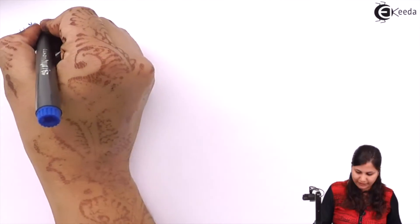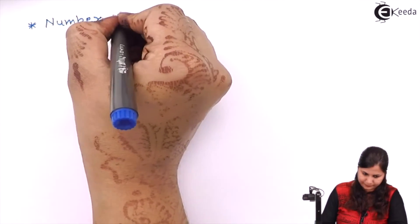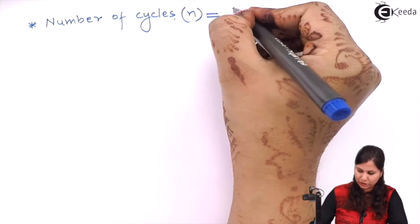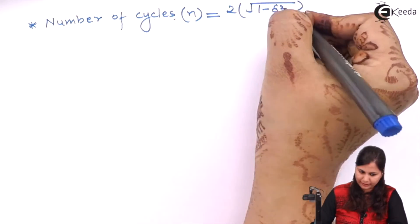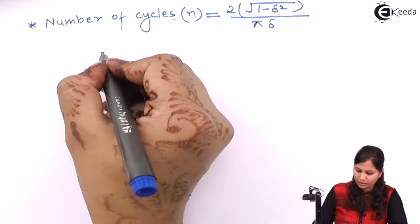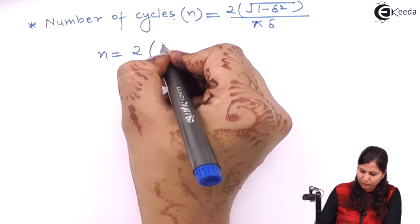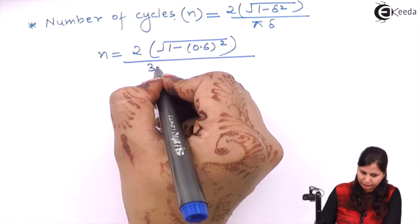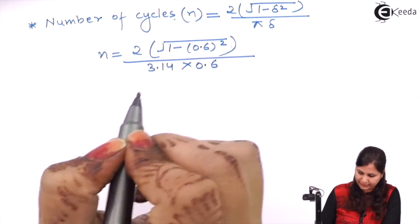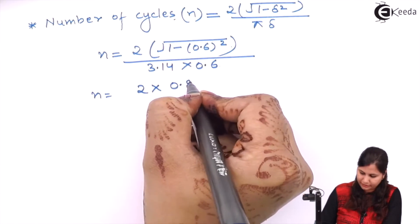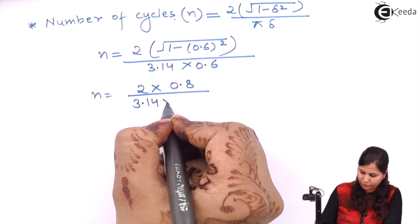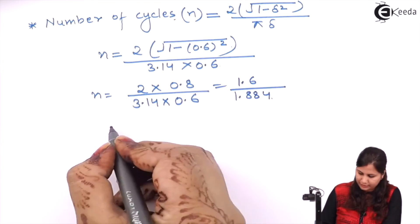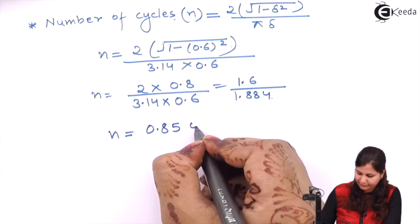The next specification is number of cycles, denoted by N. Its formula is N = 2√(1 − δ²) / (π × δ). Substituting δ = 0.6: N = 2 × √(1 − 0.36) / (3.14 × 0.6) = 2 × 0.8 / 1.884 = 1.6 / 1.884. The number of cycles comes out to be 0.85 cycles.